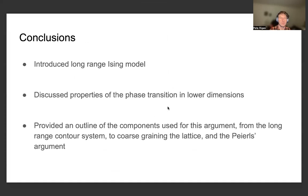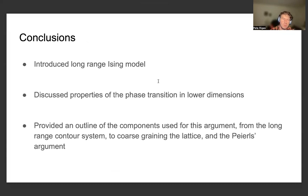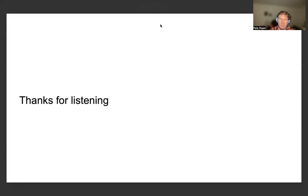To conclude, we introduced the long-range Ising model and discussed properties of the phase transition in lower dimensions. We provided an outline of the components of the argument — from the long-range contour system to coarse graining of the lattice via classical arguments, and the Peierls argument which demonstrates that the Ising model is not always in the paramagnetic phase. Thanks for watching.